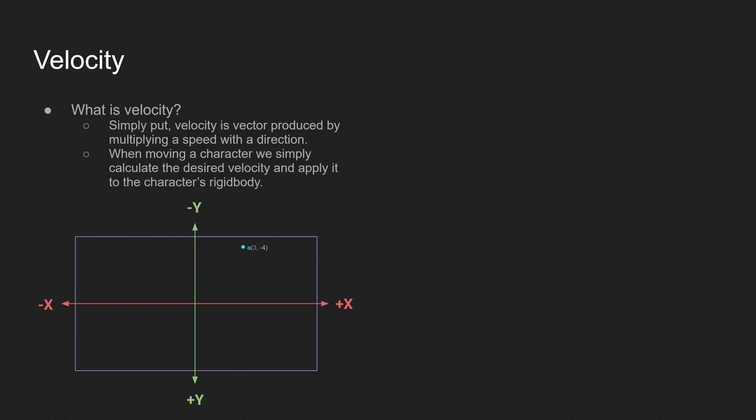So, velocity. Again, it sounds tough. It's really not super simple. Velocity is just a vector produced by multiplying a speed with a direction. When moving a character, we simply calculate the desired velocity and apply it to the character's rigid body. There's nothing more to it than that.